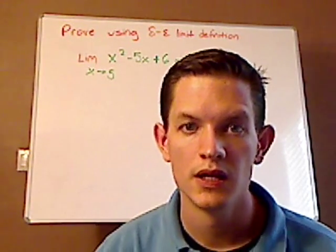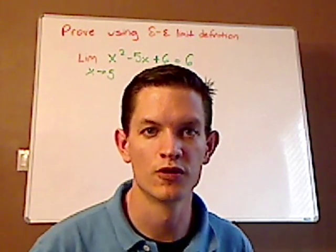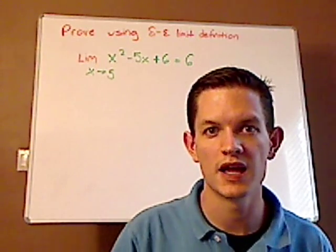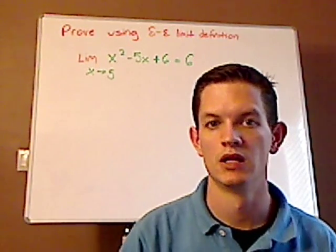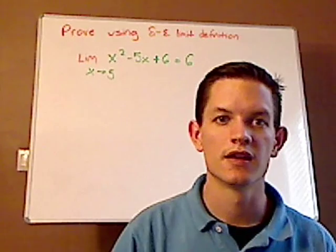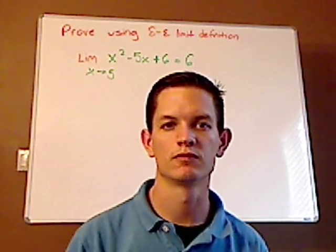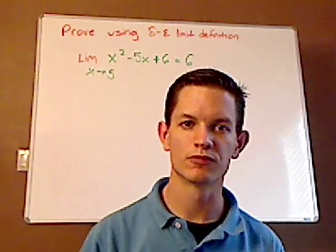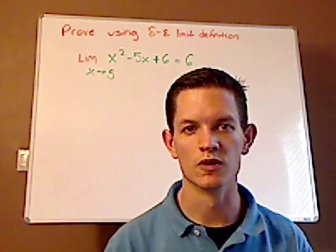Hi, I'm JD and what we're going to be doing today is proving a limit by using delta epsilon limit definition. And the limit is this: the limit x squared minus 5x plus 6 as x approaches 5 equals 6.